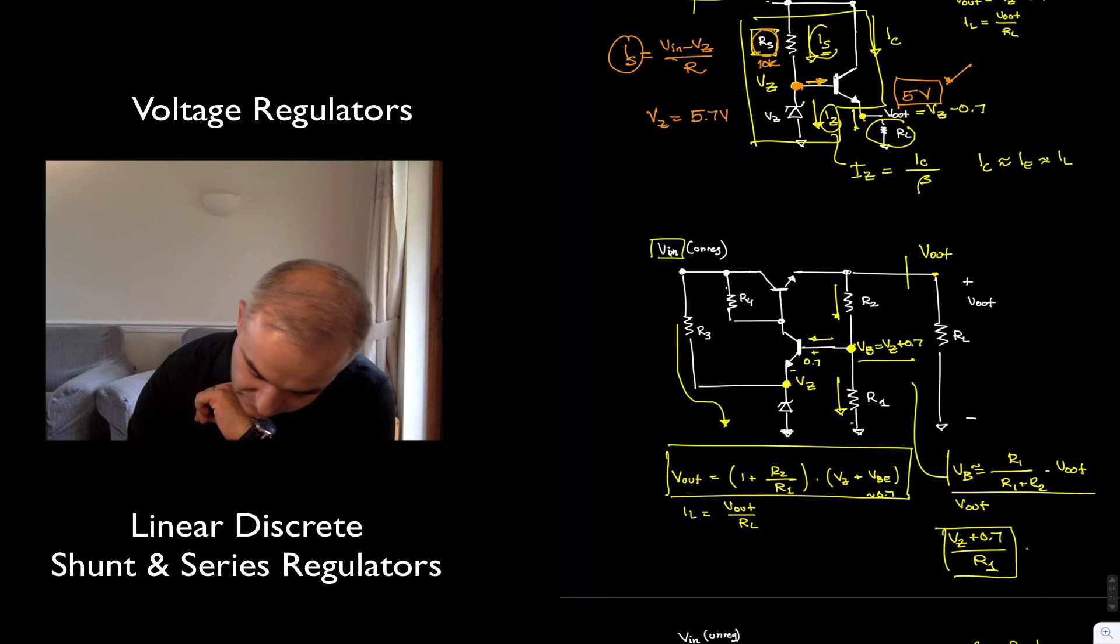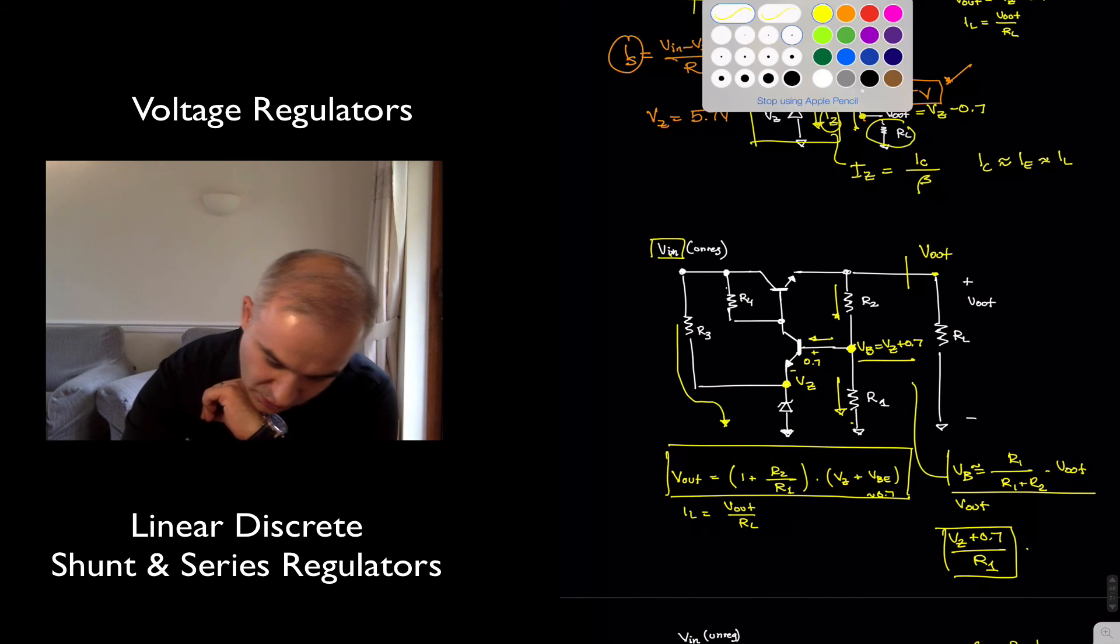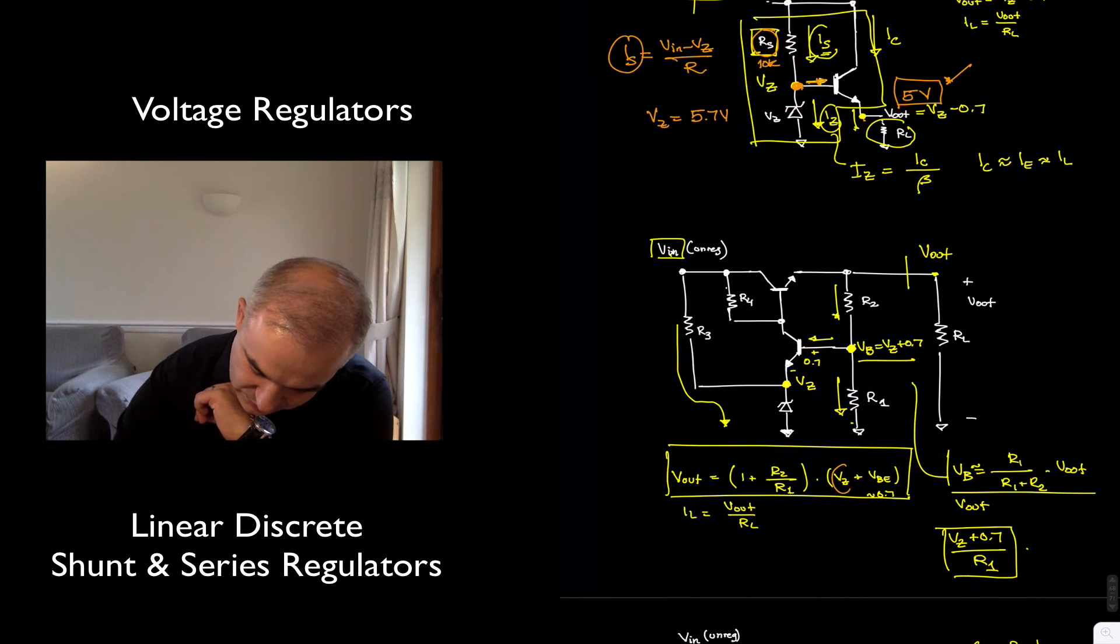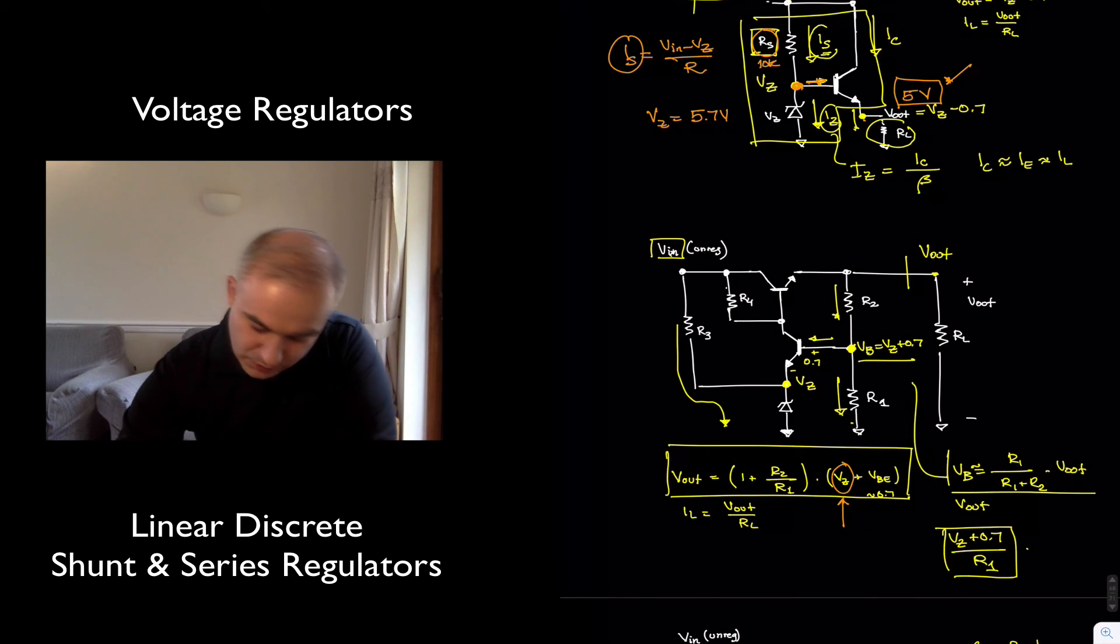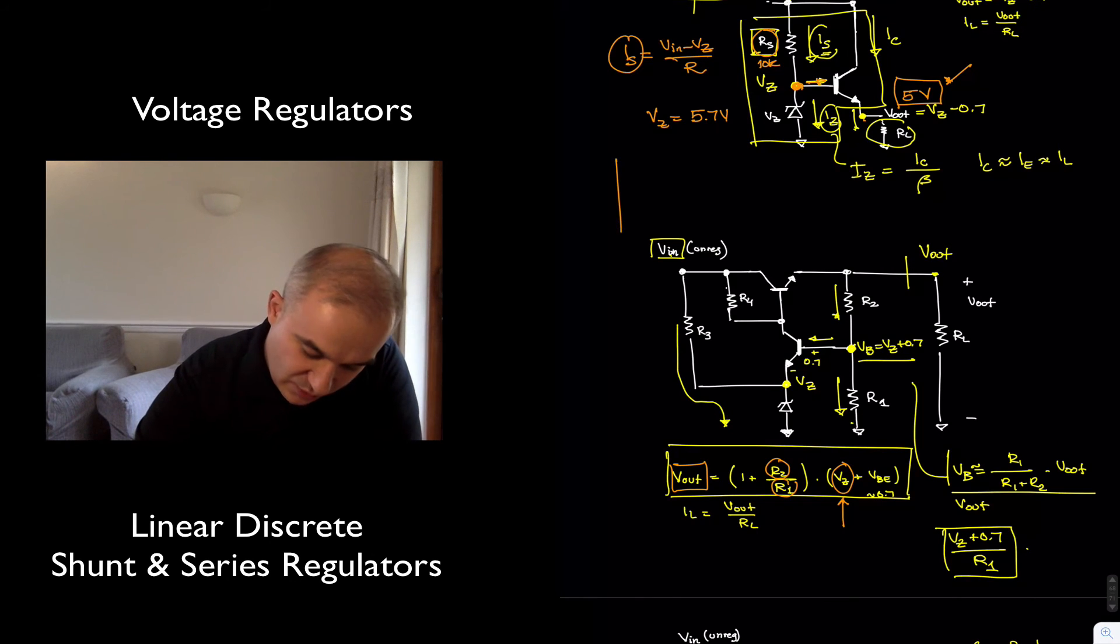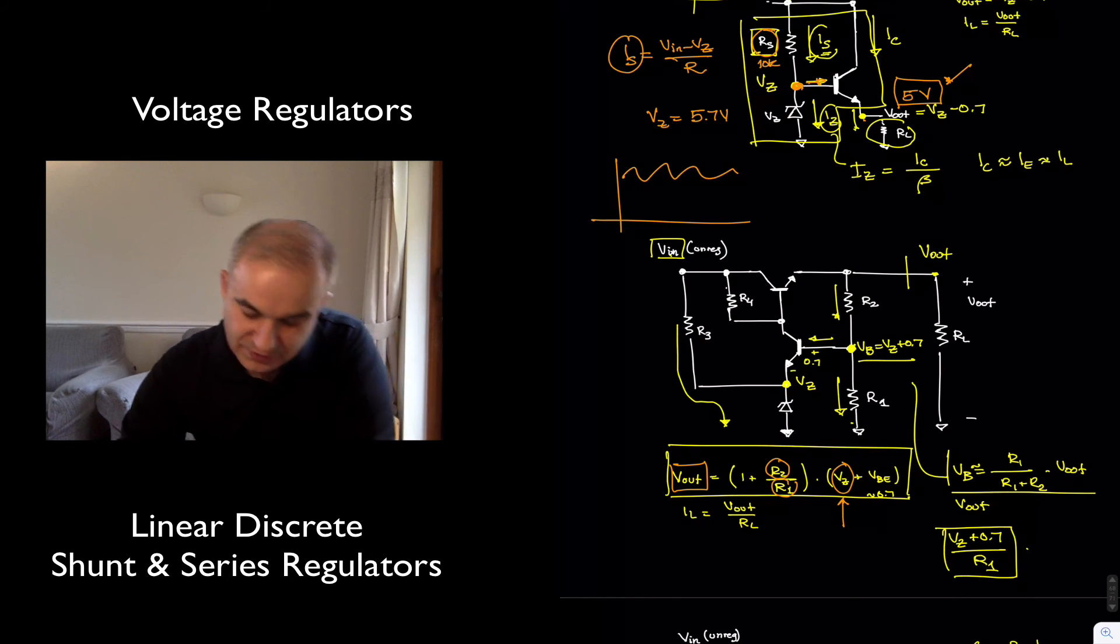Now what is relevant is that with a small Zener voltage, we are able to provide a larger output, amplified by 1 plus R2 over R1, so we can choose R2 and R1 for any output voltage that we want.